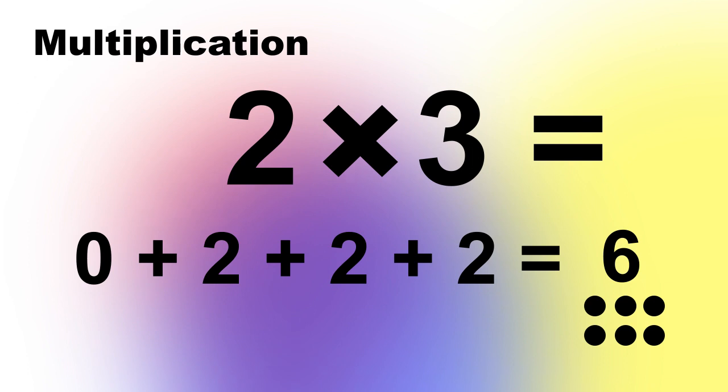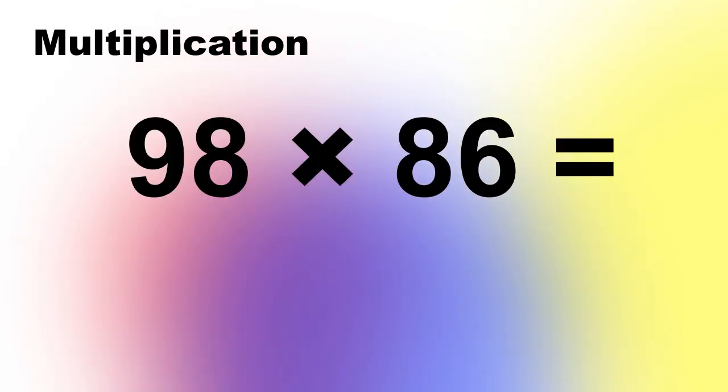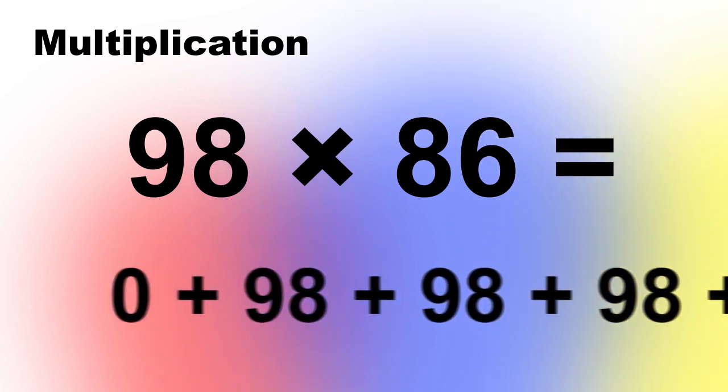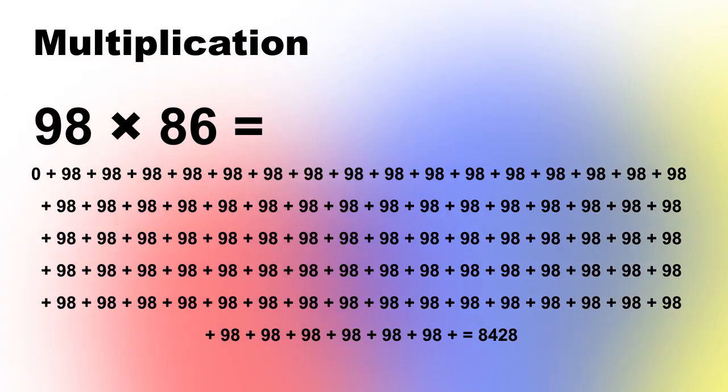Any multiplication with whole numbers can be found this way. 98 times 86 is 0 plus 98 plus 98 plus 98 until there are 86 98s.